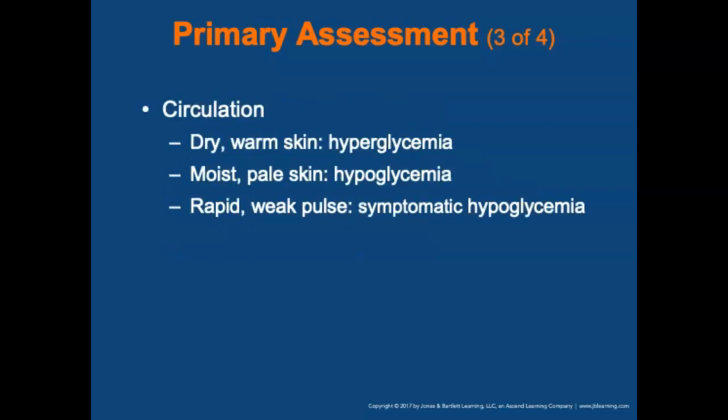Assess the patient's circulatory status. Dry, warm skin is usually associated with hyperglycemia; moist, pale skin is associated with hypoglycemia. Remember: dry equals hyper, moist equals hypo. A rapid, weak pulse is symptomatic of hypoglycemia.